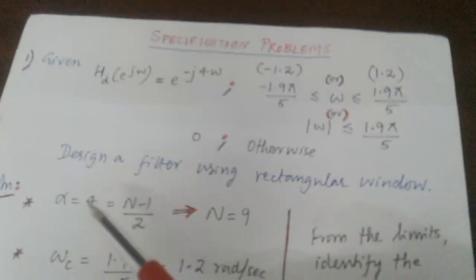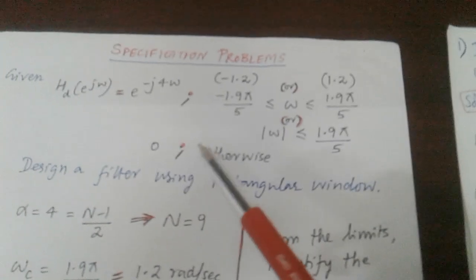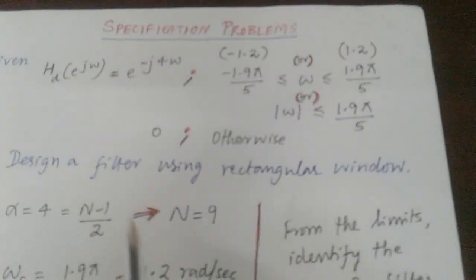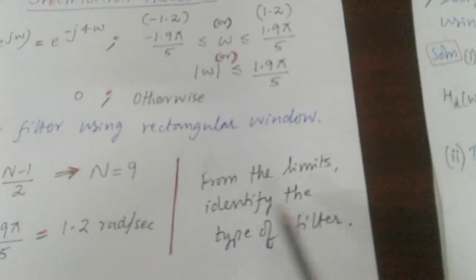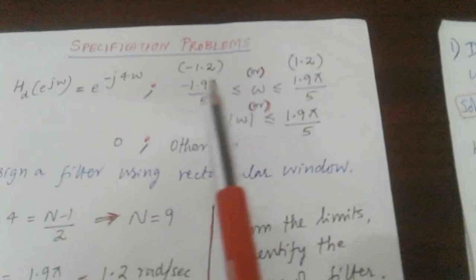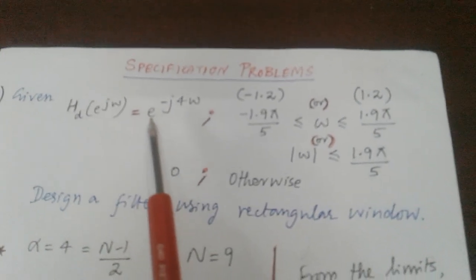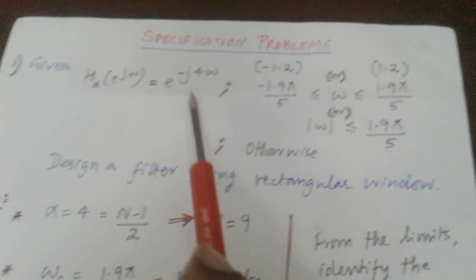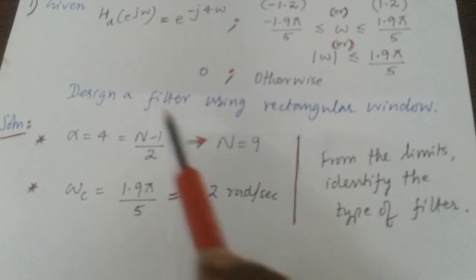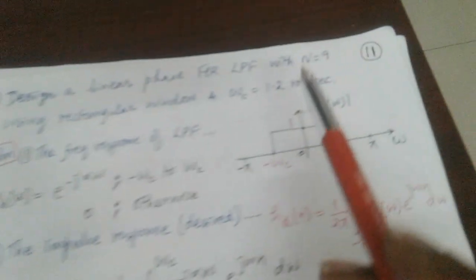From the limits, identify the type of filter — here it is a low-pass filter, since it ranges from −ωc to +ωc. Capital N is given as 9. In the specification form, the delay alpha equals 4 (since the filter response contains e^{−j4ω}), and using α = (N−1)/2 we get N = 9, confirming the statement and specification problems are consistent.